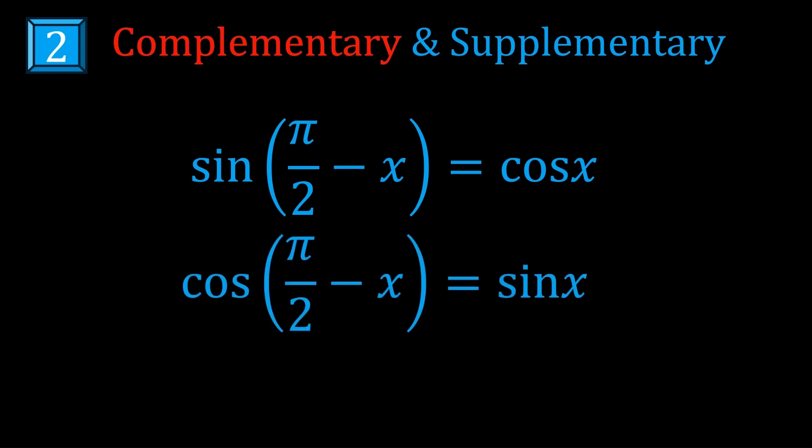Well, cosine just stands for complementary sine, and complementary angles differ by pi on 2, or 90 degrees, and that's why these identities hold.